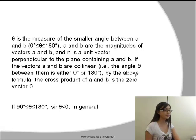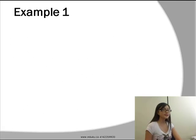If theta is between 90 and 180 degrees, then sine theta will be less than 0. In general, the magnitude of U cross V is equal to the magnitude of U times the magnitude of V times sine theta.